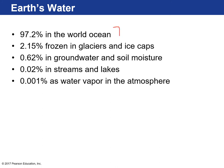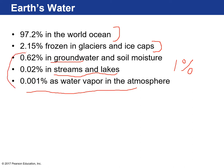Most of Earth's water — about 97.2% — is found in the ocean. The rest is found in glaciers and ice caps. All the water in the atmosphere, streams and lakes, and groundwater accounts for less than 1% of global water — so most water is found in the oceans and in glaciers.